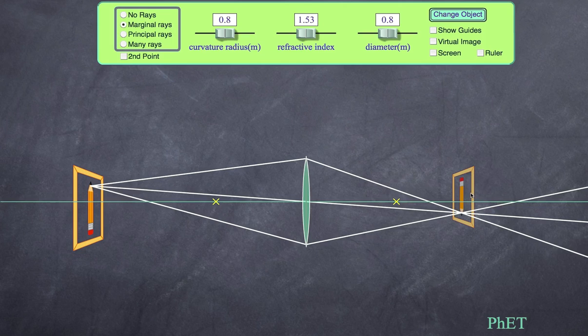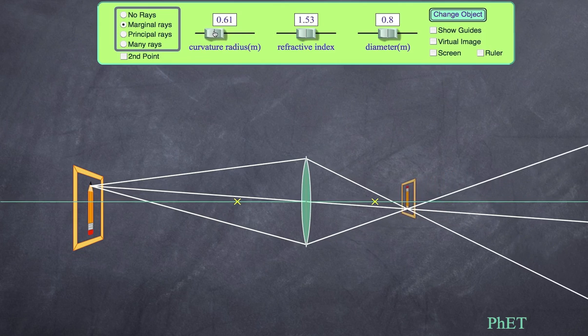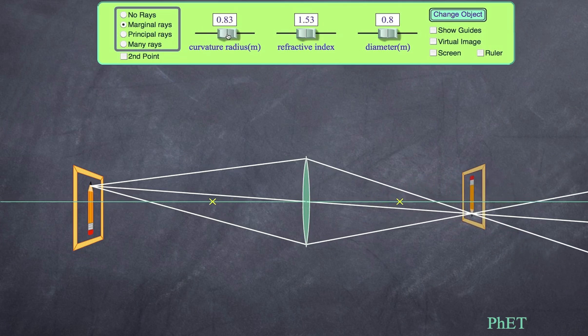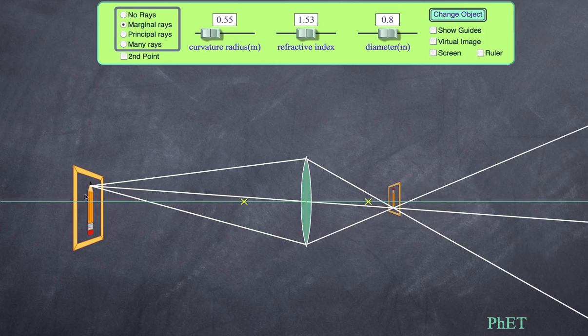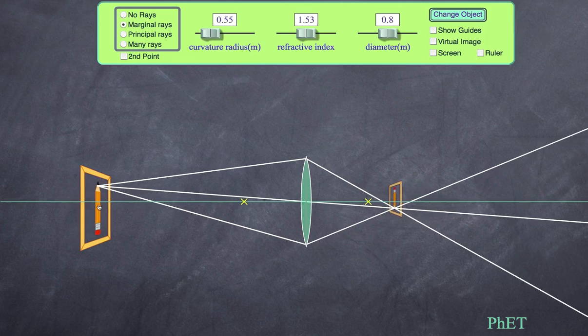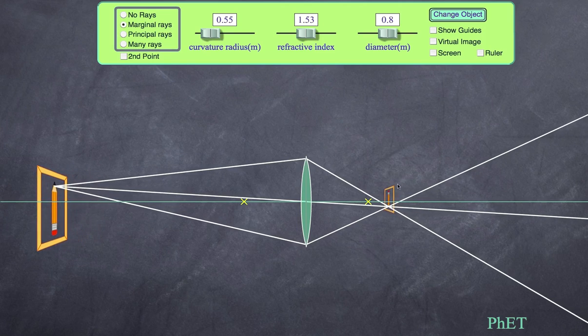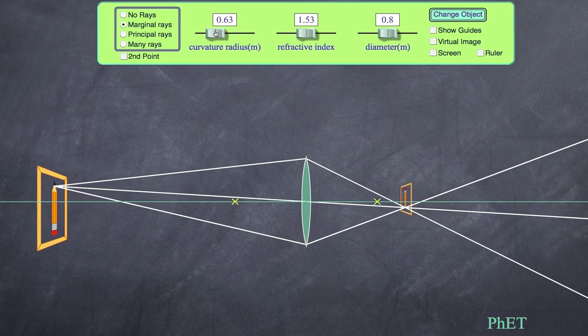Secondly, what we can change is the curvature - how much does this lens bend? That clearly affects the refraction, and you can see what that effect is. The relationship between this object and the image for various distances remains the same. As I move this further away, the image gets smaller, but the curvature will affect by how much.